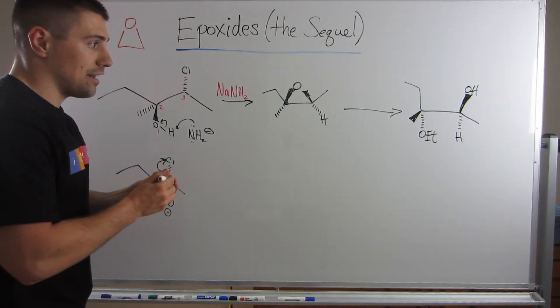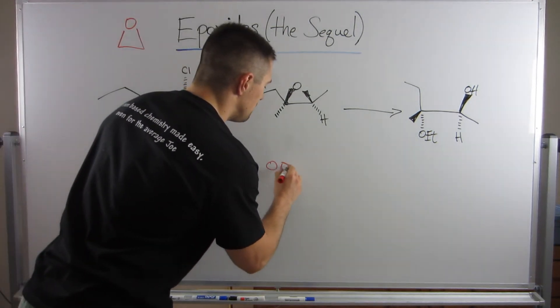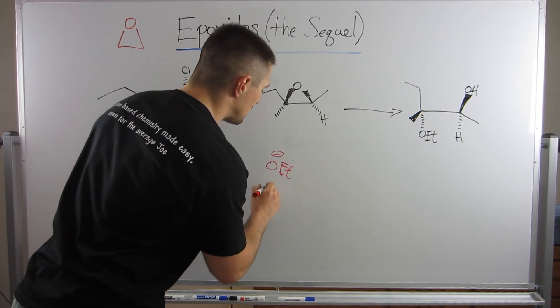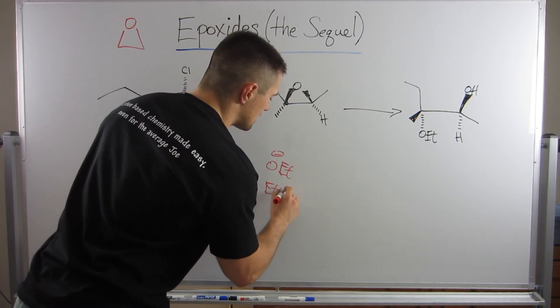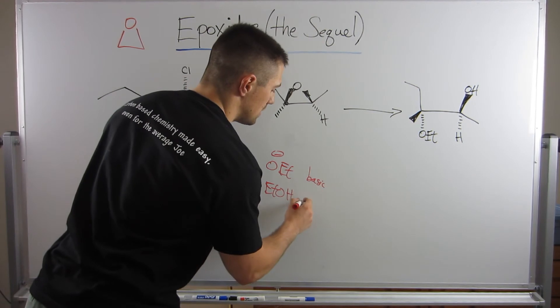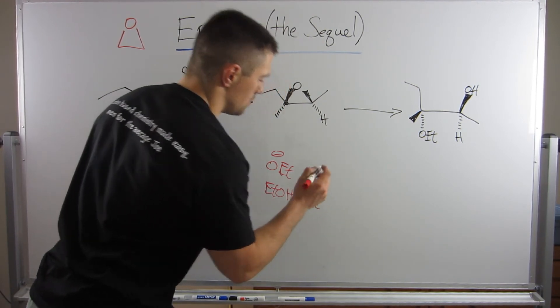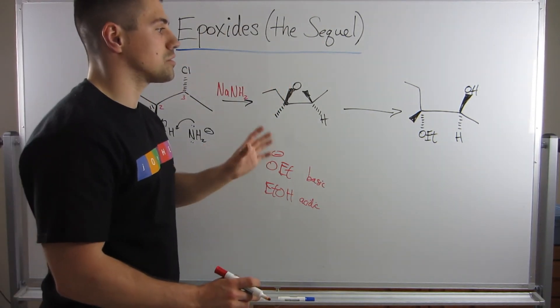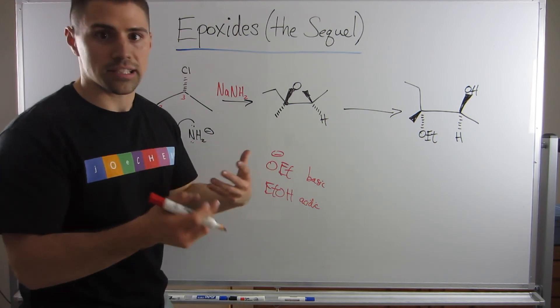Because this would be the basic, and this would be the acidic. So how are we going to do this? Well, all we need to do is look to see which carbon is, you know, more or less substituted. Well, the ethyl is attached to this carbon right here.